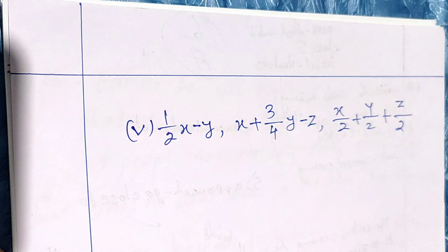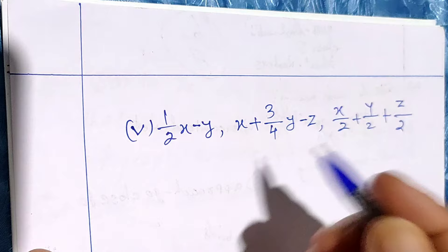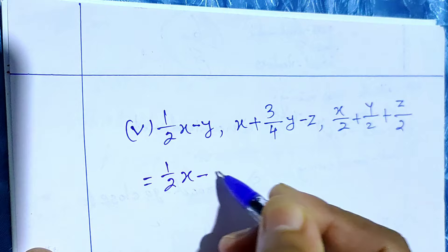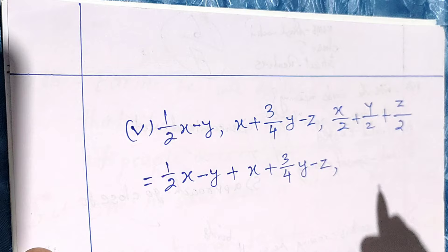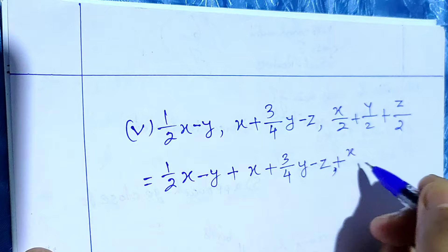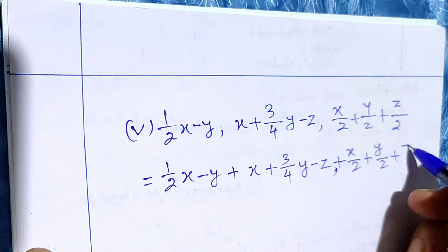Let us now do the last one, question number 5. The expressions are: one-half x minus y plus x, plus three-quarters y minus z, then minus z upon 2 plus y upon 2 plus z upon 2.